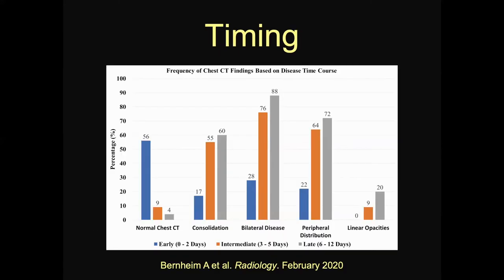Just quickly about timing — this was from Mike Chung and Adam Bernheim's group at Mount Sinai in New York. They looked at the timing of the findings. Earlier on, the majority of patients have a normal CT. As time passes up to 12 days, you start seeing more and more consolidation, more bilateral disease, and a stronger peripheral distribution. Linear opacities, which is probably what's left as this starts to clear, show up around two weeks out. In China, they were scanning early and frequently — many patients had three or four CTs. In the US, we're not scanning much, and if we are, it's maybe for a different reason or suspecting a complication.